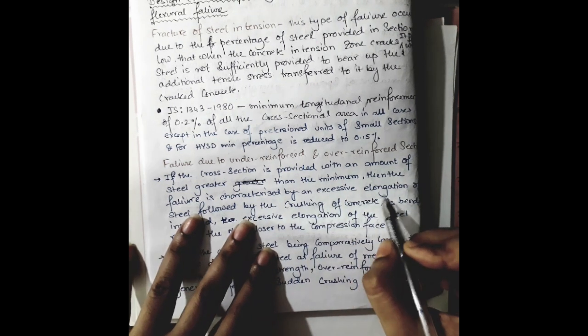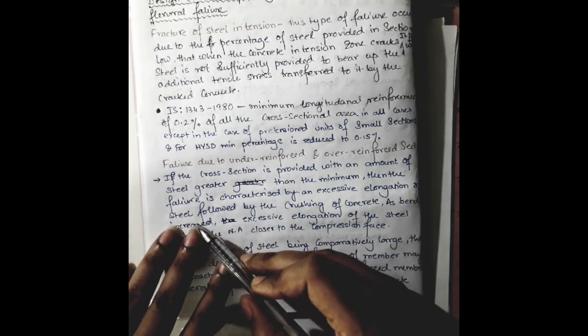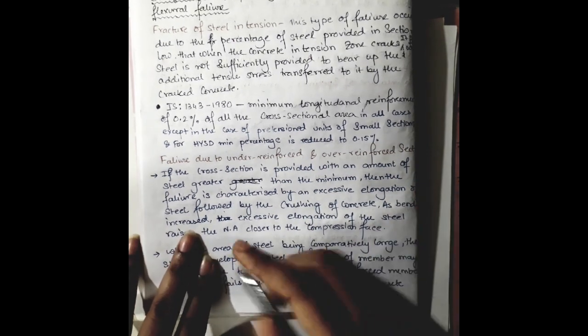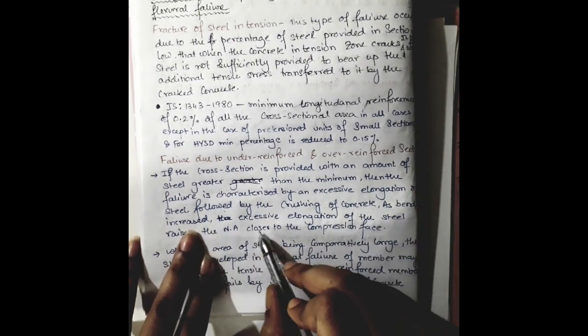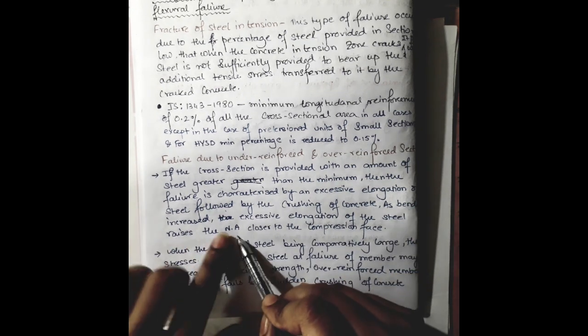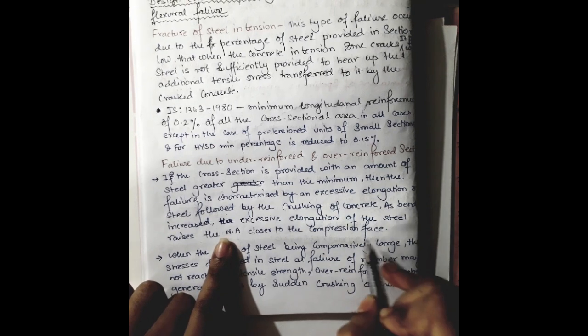If the cross section is provided with an amount of steel greater than the minimum, then the failure curve is characterized by an excessive elongation of steel followed by the crushing of concrete. As bending increases, excessive elongation of the steel raises the neutral axis closer to the compression face.